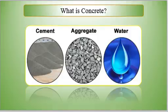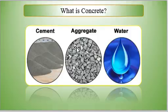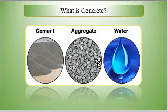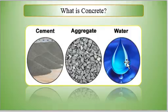Cement acts as a binding material — it binds the coarse aggregate and fine aggregate together. Water acts to start the reaction in cement so that it can begin setting. Aggregate is used for taking loads. There are two kinds: coarse aggregate and fine aggregate. Fine aggregate fills the voids between coarse aggregate, and cement binds all this material by starting the reaction.